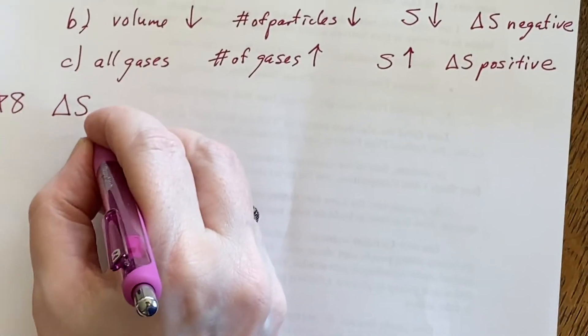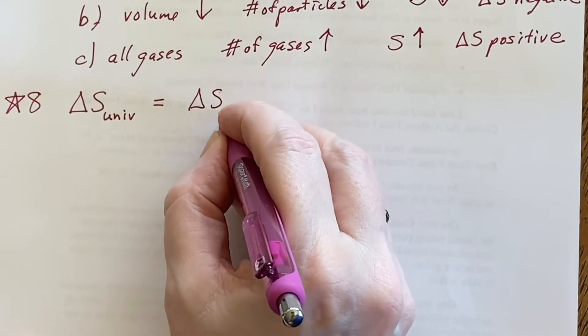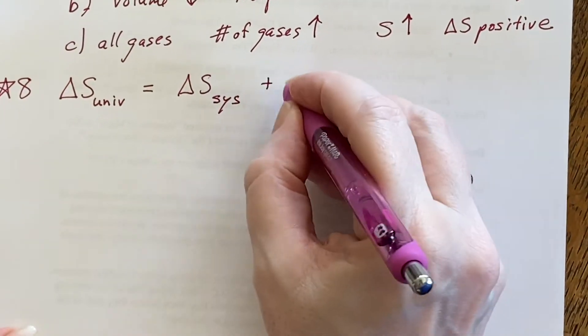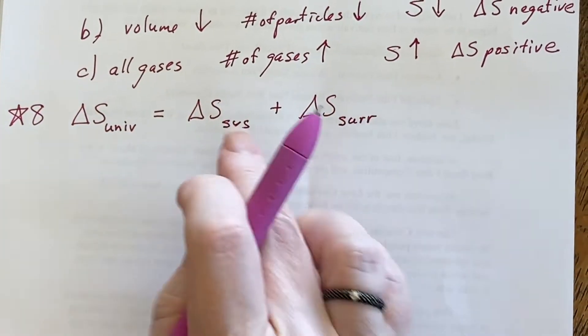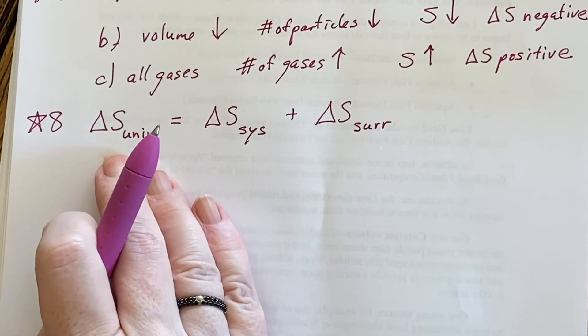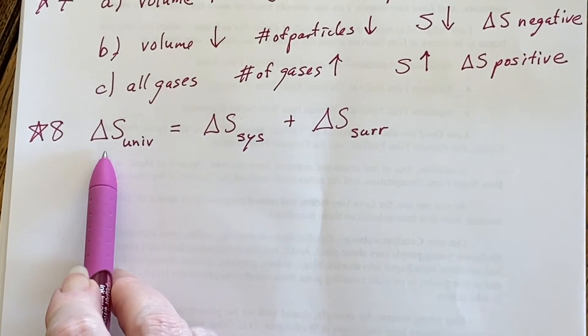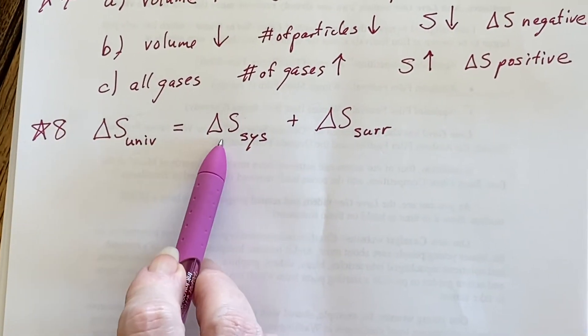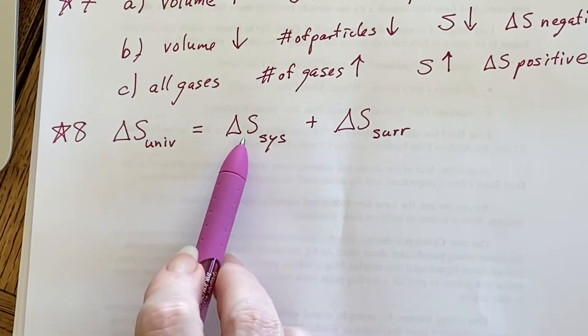Delta S of the universe is made out of two things. Delta S of the system and delta S of the surroundings. Together, the system and the surroundings make up the universe. So if I'm trying to make sure that this goes up, it is possible for this to be negative, as long as this is more positive than this was negative.